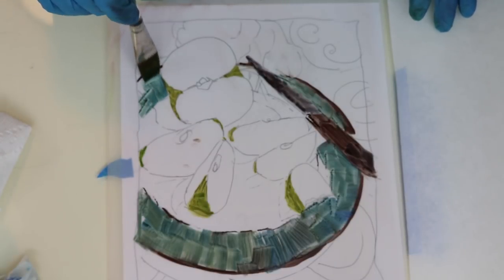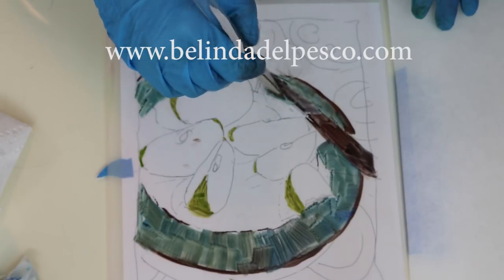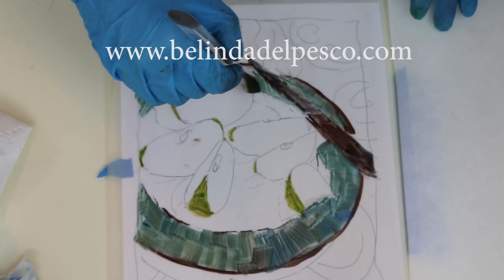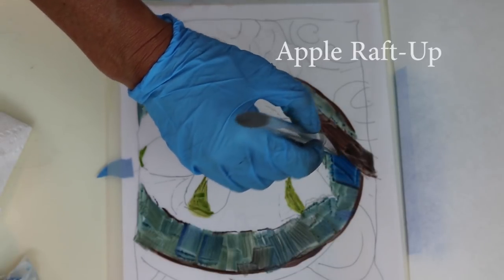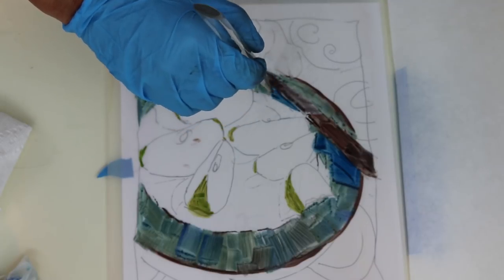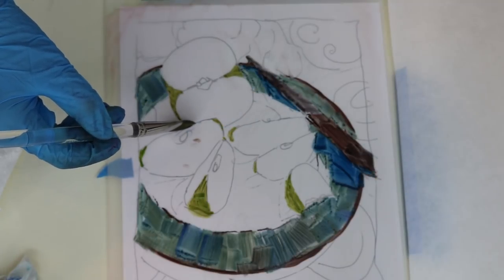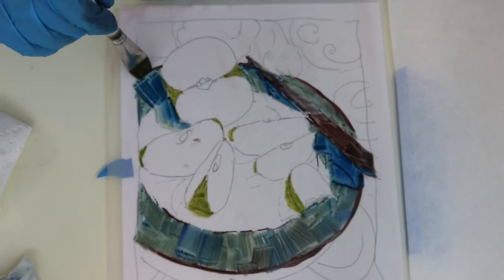If you'd like a complete supply list that's printable, I've put one on my blog. If you go to belindadelpesco.com and search the blog for the title of this piece, which is Apple Raft Up, you'll see this video as well as some still shots of the process and a downloadable supply list.